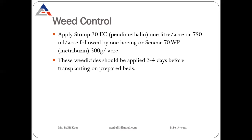Now weed control. When growing any vegetable crops, we have to control weeds manually or by applying herbicides. Hoeing can be done in tomatoes and we can apply Stomp 30 EC at the rate of 1 liter, followed by one hoeing. Some other weedicides like Sencor can also be sprayed. These weedicides should be applied three to four days before transplanting on the prepared beds.